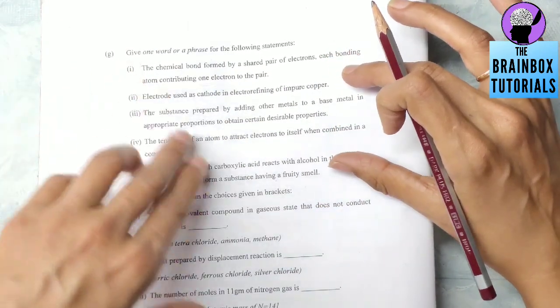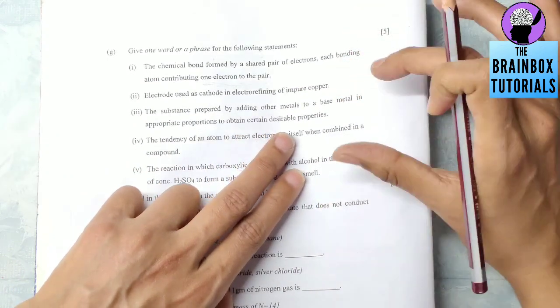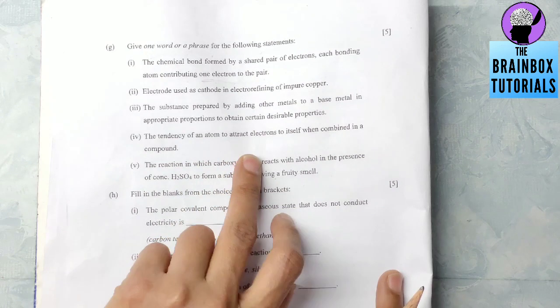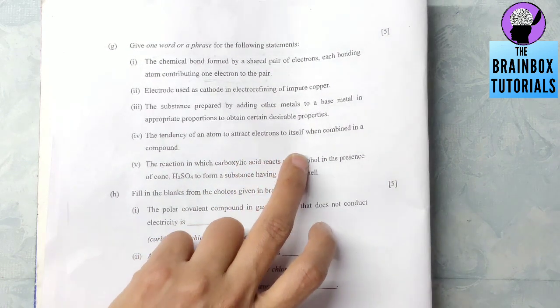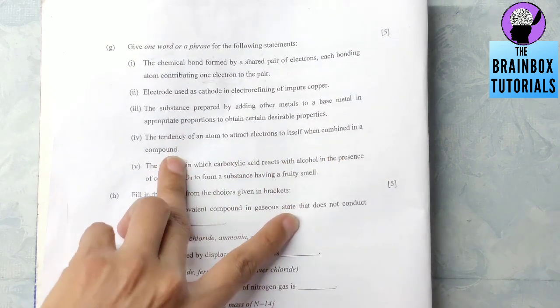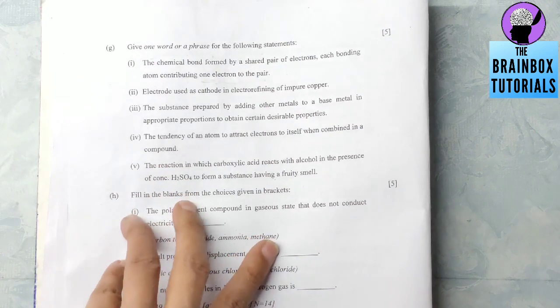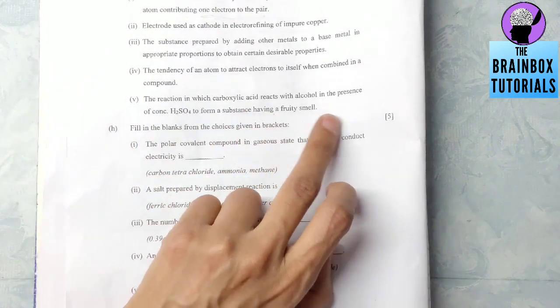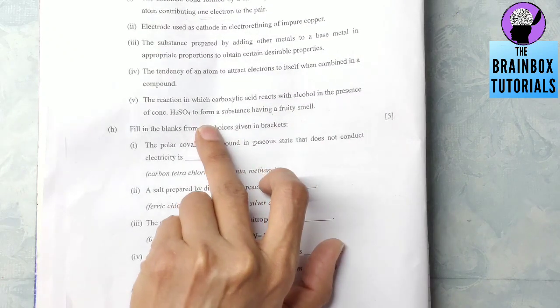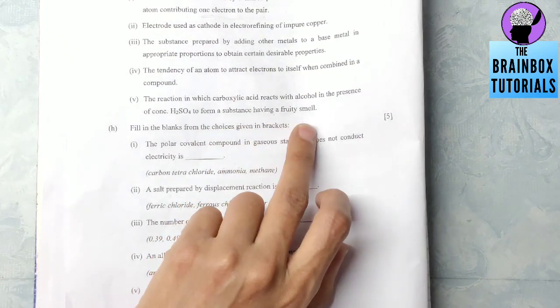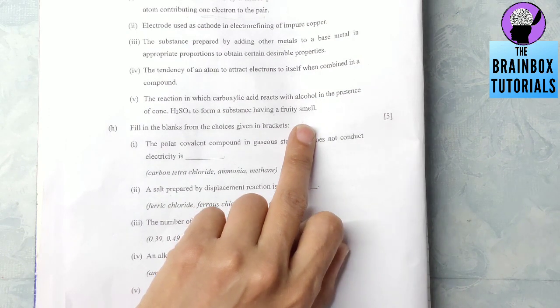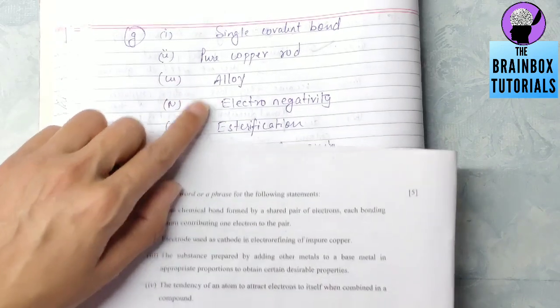Number four: the tendency of an atom to attract electrons to itself when combined in a compound. This is electronegativity. Number five: the reaction in which carboxylic acid reacts with alcohol in the presence of concentrated H2SO4 to form a substance having a fruity smell. This is important in organic chemistry - this is esterification.